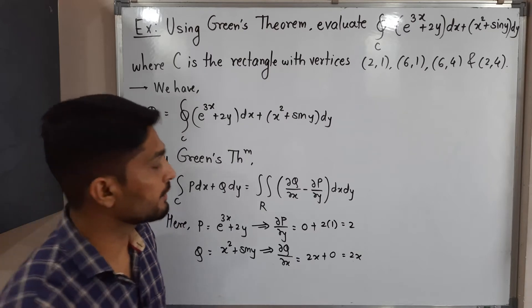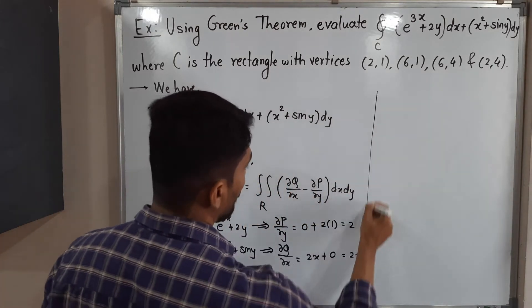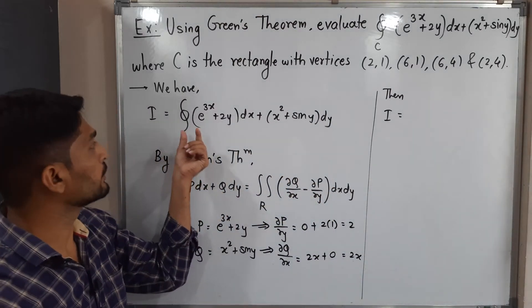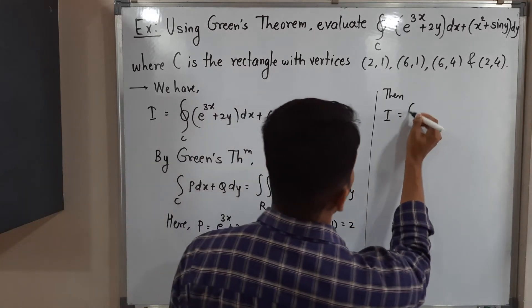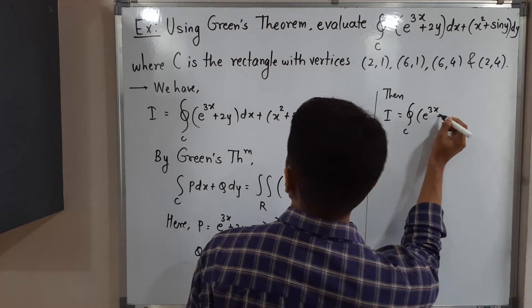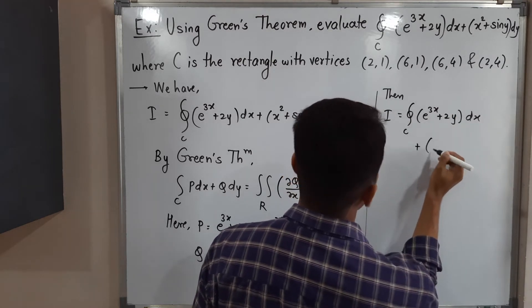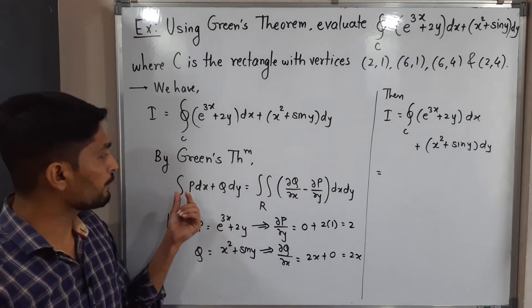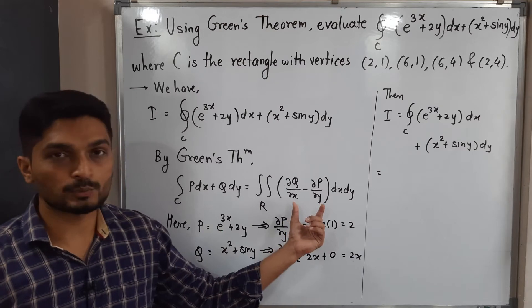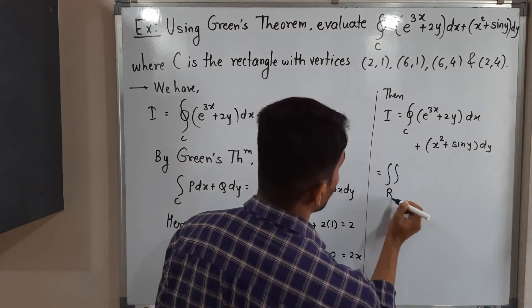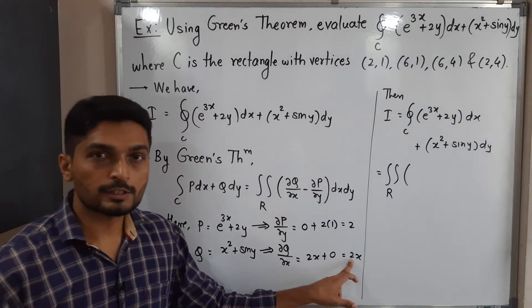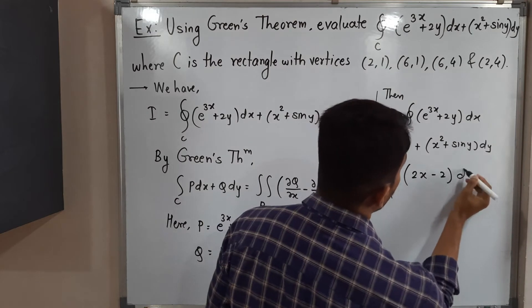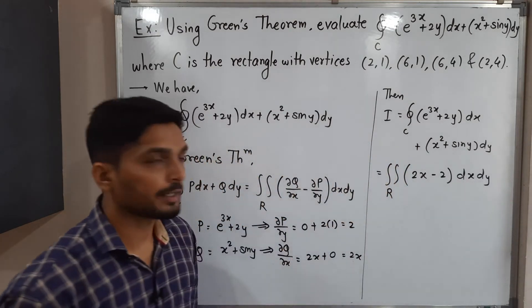Now let us use Green's theorem to find the value of this line integral. I equals the integral over C of e^(3x+2y) dx + (x² + sin y) dy, which by Green's theorem equals the double integral over R of (∂Q/∂x − ∂P/∂y) dx dy = double integral over R of (2x − 2) dx dy. Now we need the limits of this integral.